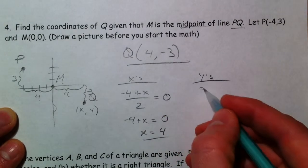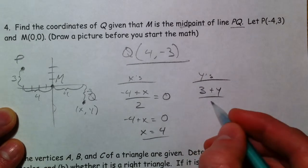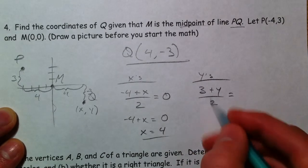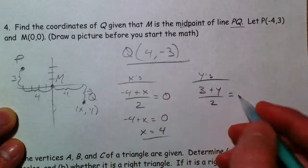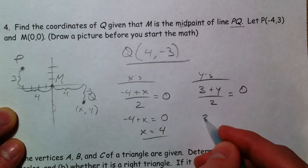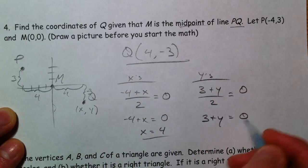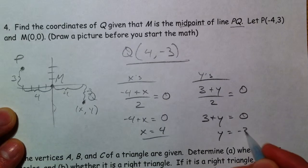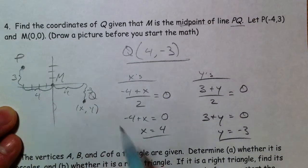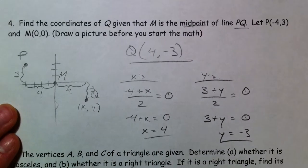Or do it with the y's. 3 plus y divided by 2 equals our y value of 0. Multiply by 2, subtract your 3 and you get y as negative 3. Either way, I prefer the first method because it's very logical.